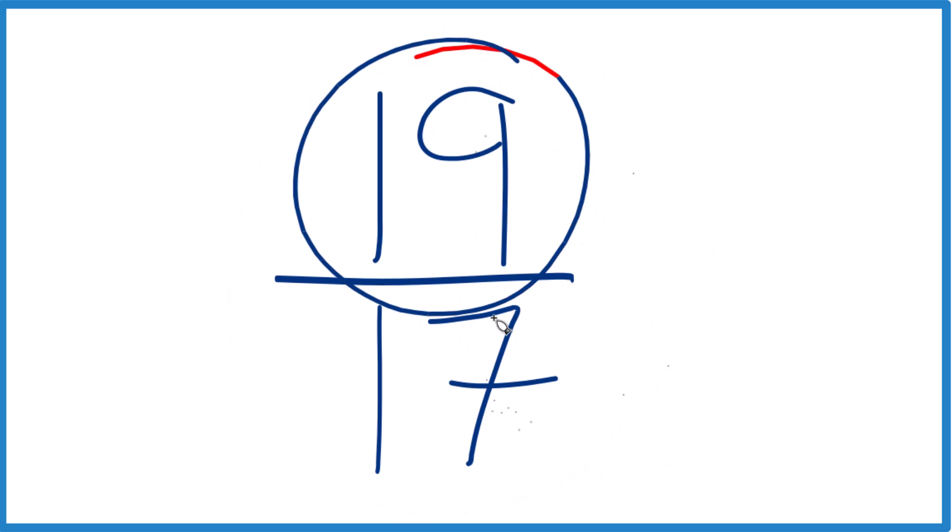But since 19, the numerator, is larger than 17, the denominator, this is an improper fraction. So we could write this as a mixed number.